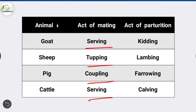The act of parturition in goat is called kidding. The act of parturition in sheep is lambing. The act of parturition in pig is farrowing, and the act of parturition in cattle is calving.